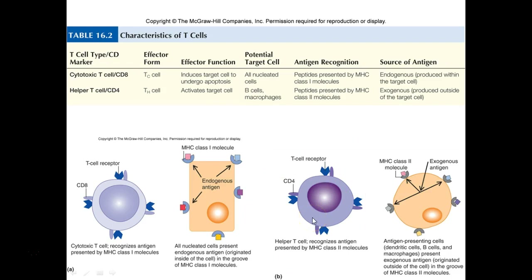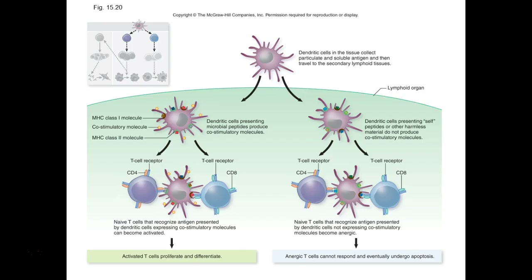Only antigen-presenting cells have MHC class 2, so they're the only ones that can talk to helper T cells — and they need to, because the helper T cell is going to help them out. Dendritic cells are really awesome antigen-presenting cells and are the main presenters for getting information to our adaptive immune response. Dendritic cells, macrophages, and B cells also have MHC class 1 on their surface.